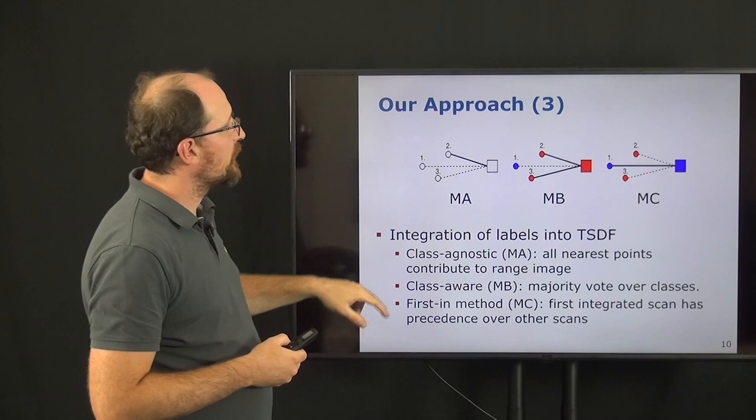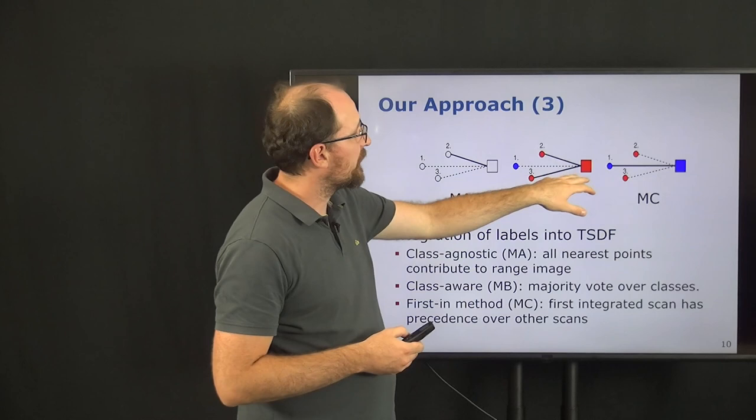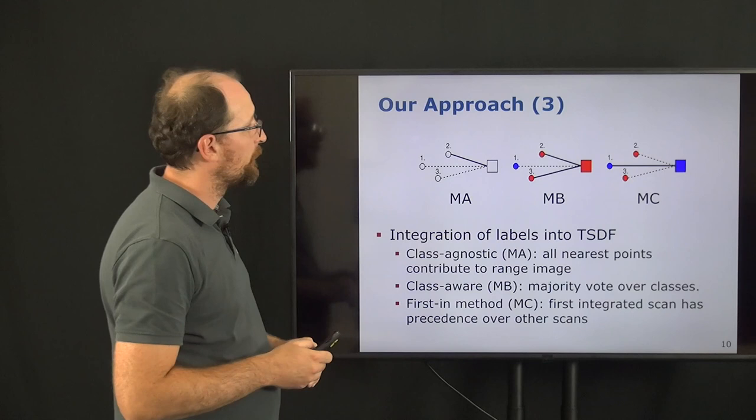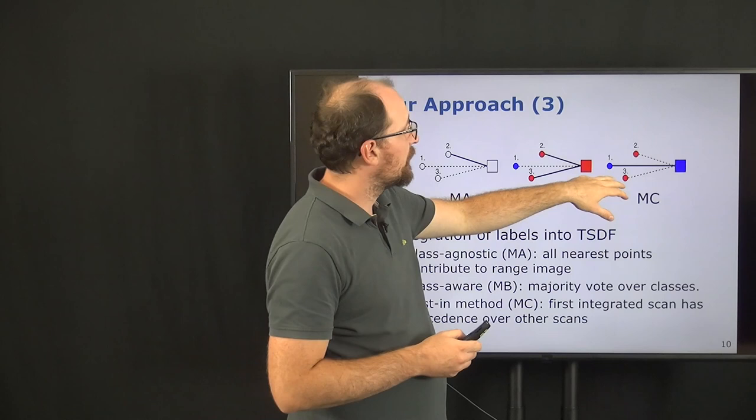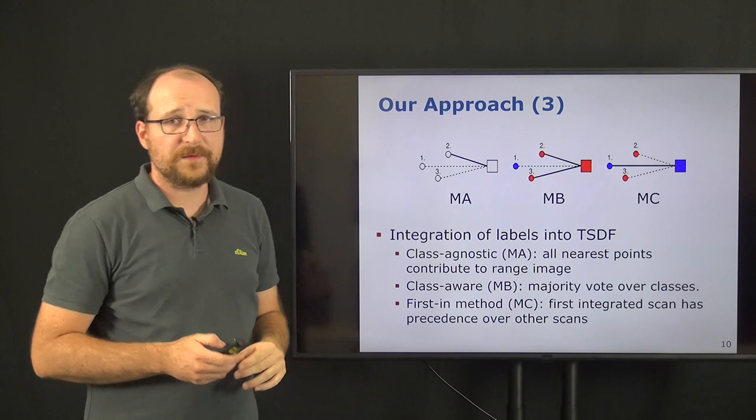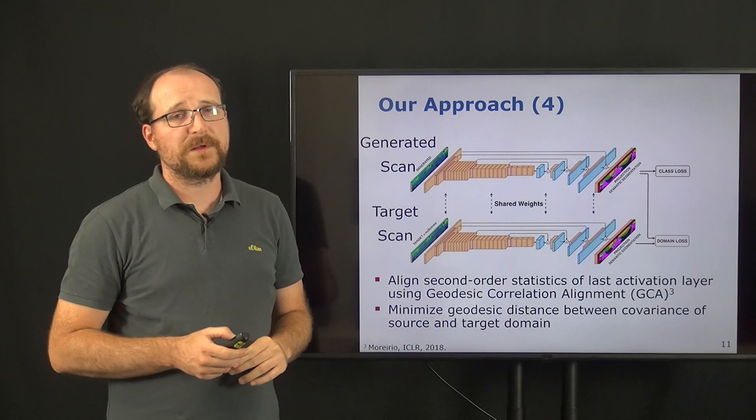In the second method, we are using all points that get projected in the same range pixel, and then use a majority vote over the labels for all the points to assign a semantic label for this range image pixel, which is then used to generate the TSDF. In the last method, we are considering only the first point that provides the semantic information. That means points that come after that from a timestamp are not considered anymore. And the remaining scans are used to fill in parts that are not seen by the first sensor or the first pose.